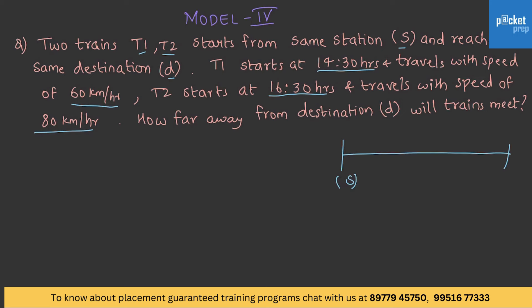That is, source to destination. Train T1 starts at 1430 hours and T2 starts at 1630 hours. This travels with 60 kilometers per hour and this travels with 80 kilometers per hour. Where do these two trains meet is the asked question.